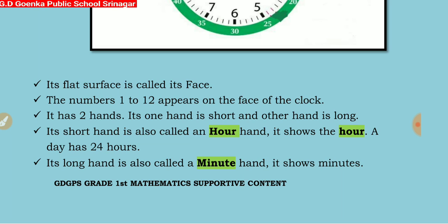Dear little koinkans, do you know when the long hand points to number 12, the time is o'clock? And when it points to number 6, the time is half past. So that was all for today. Thank you. Goodbye.